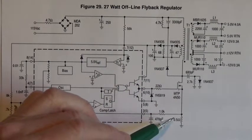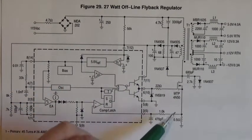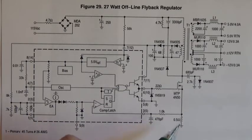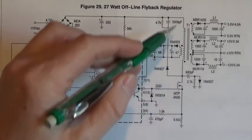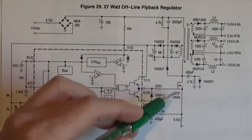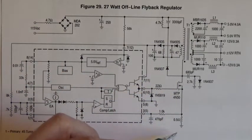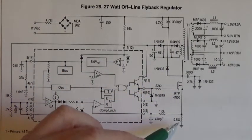you want to check this current feedback resistor right here and make sure that it's not opened up because you have large amounts of current flowing through this shorted device through that 0.5 ohm resistor and that will open up.